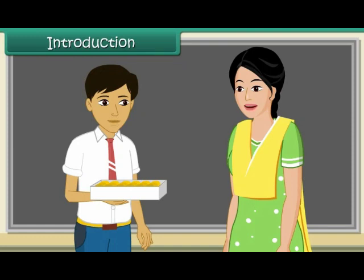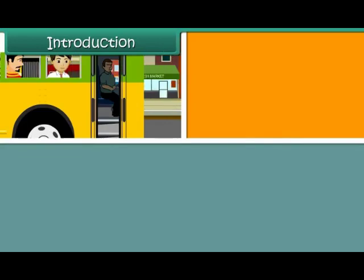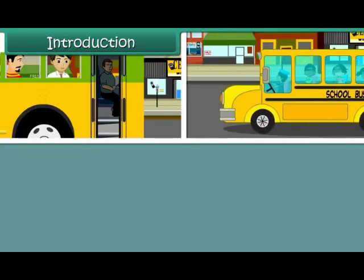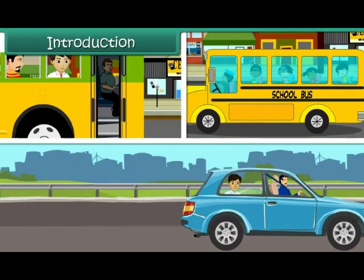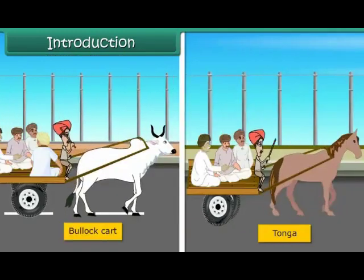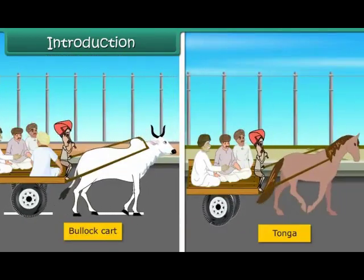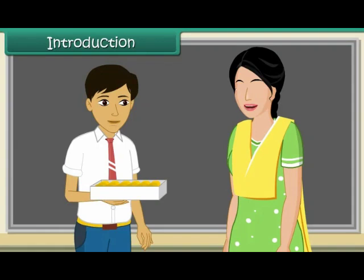We all travel every day to come to school. Some of us come by bus, some by the school bus, and some by their own cars. But have you thought about what was used by people earlier to travel from one place to another? Bullock carts and tongas. Good. Let us look at some modes of transport used in the early days.